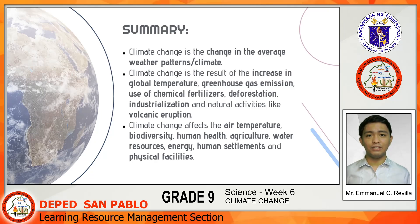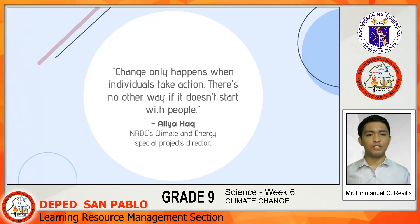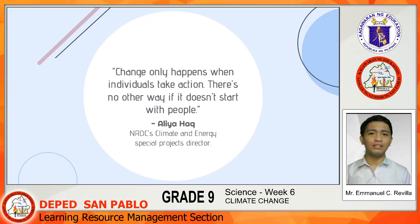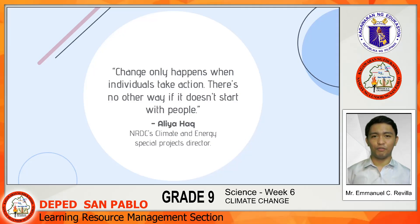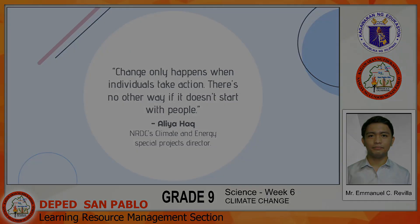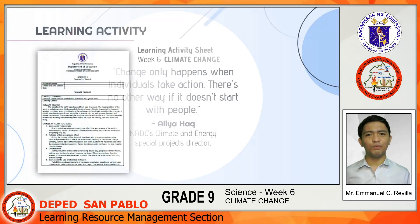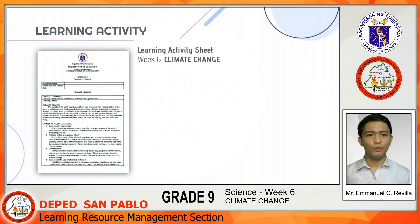Can we do something about climate change? Definitely. As mentioned by Aliyah Haq, NRDC's Climate and Energy Special Projects Director, change only happens when individuals take action. There's no other way if it doesn't start with people. If we start now, even with our simple ways, we will be able to reduce the impacts of climate change. You will have to accomplish the Learning Activity Sheet for Week 6 entitled Climate Change.